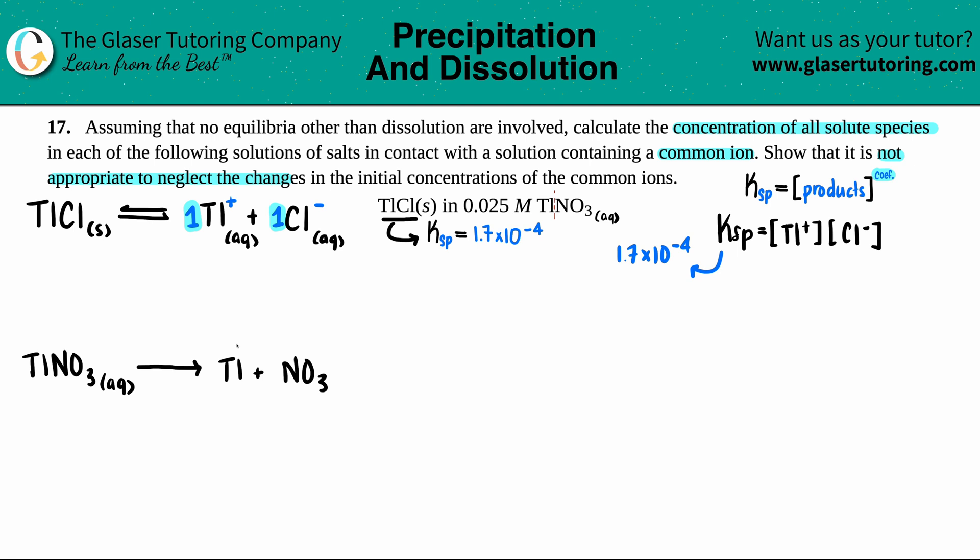From what we said before, the Tl was a +1 charge and nitrates are always -1, and everything looks like it's one-to-one so we're good with that.